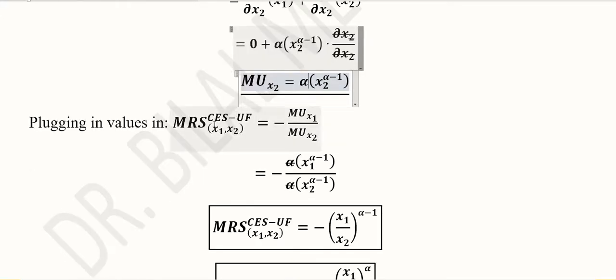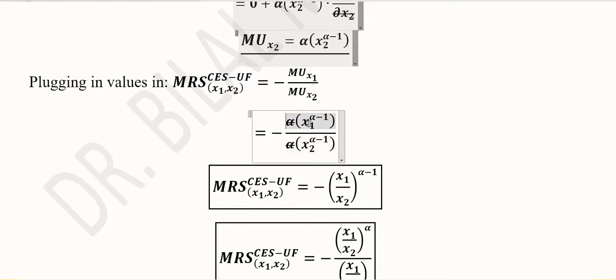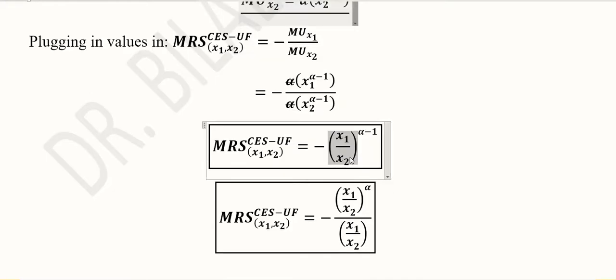Now we are in a position to use those values of MU_x1 and MU_x2 to find out the marginal rate of substitution of CES utility function. So we substituted the values of MU_x1 and MU_x2. Simplifying we get this term which is quite clear. And we can also write it like this because we have separated this minus 1 along with its base.